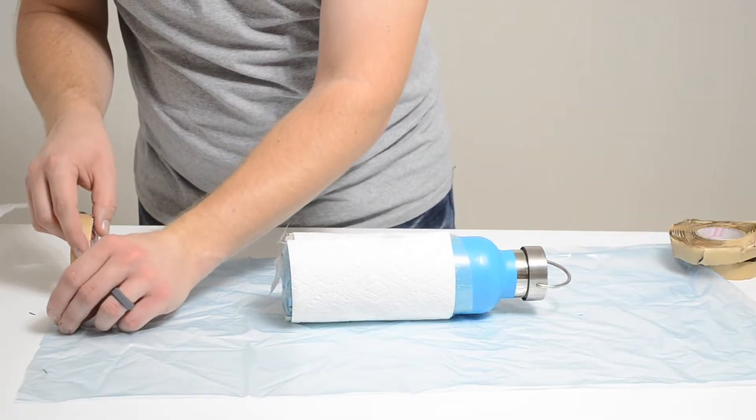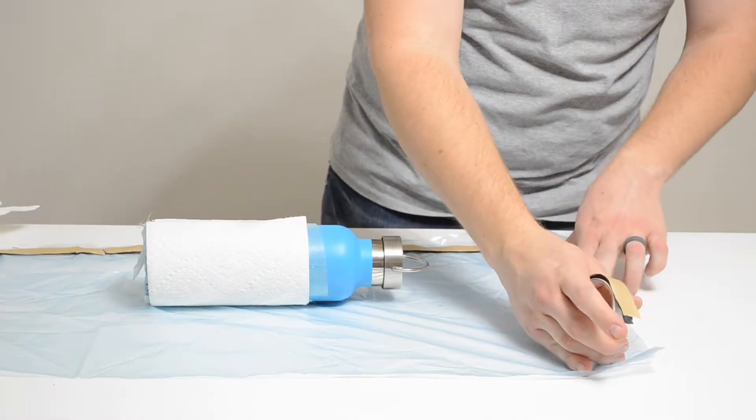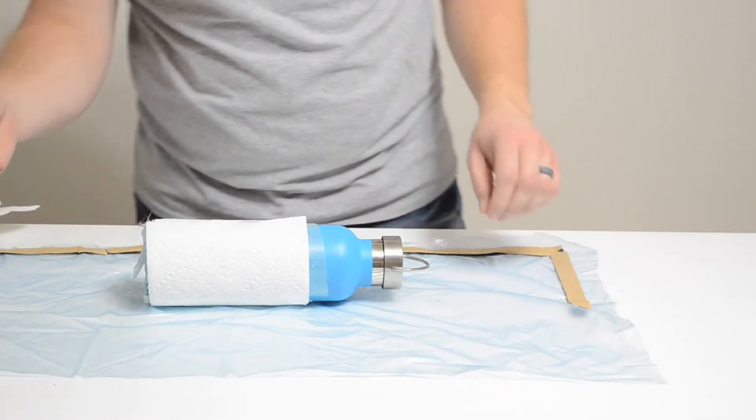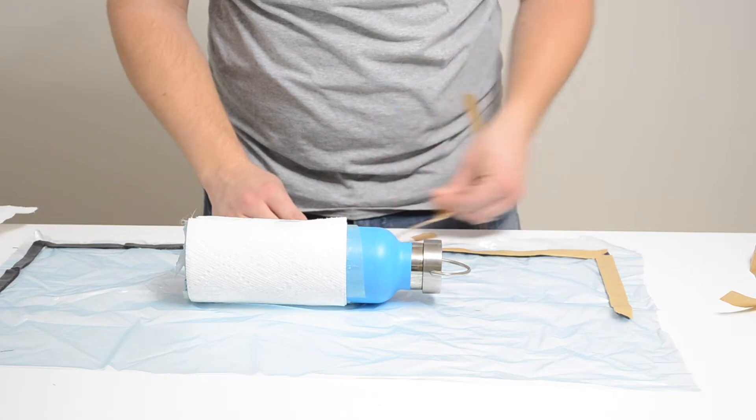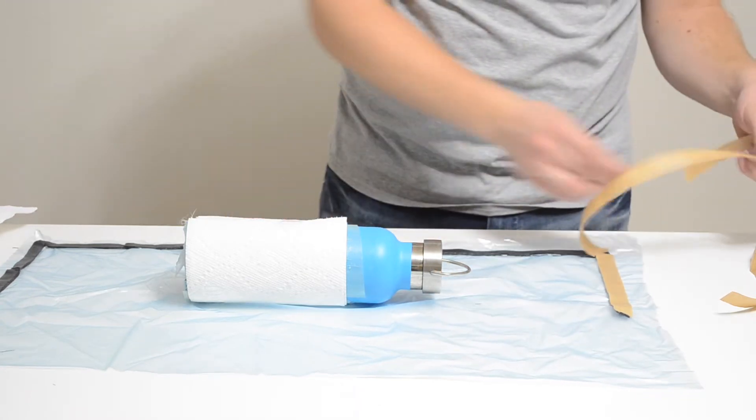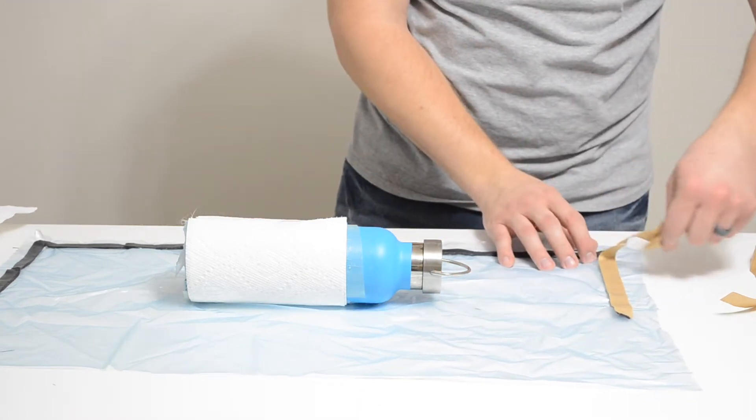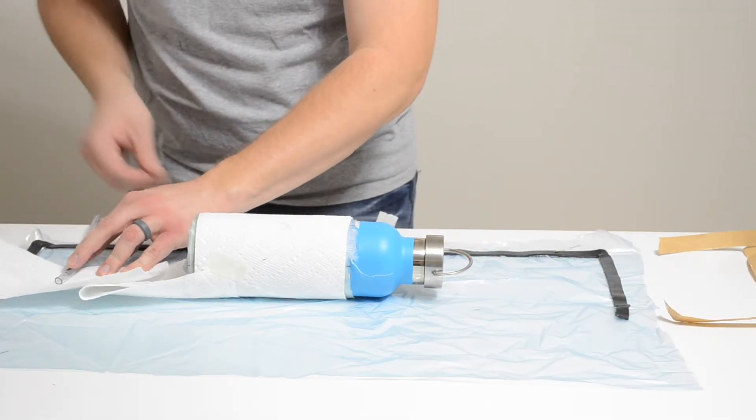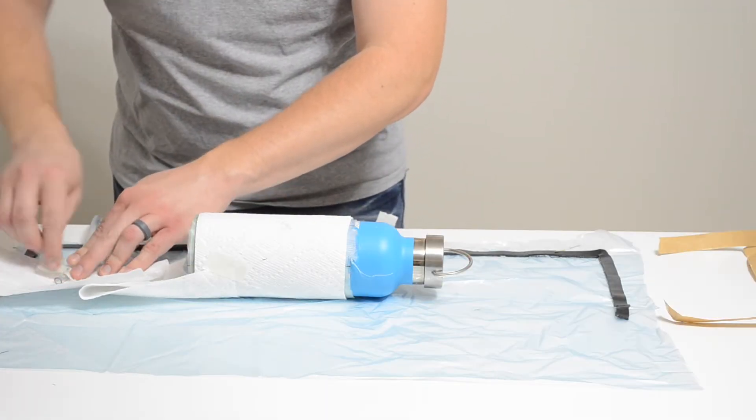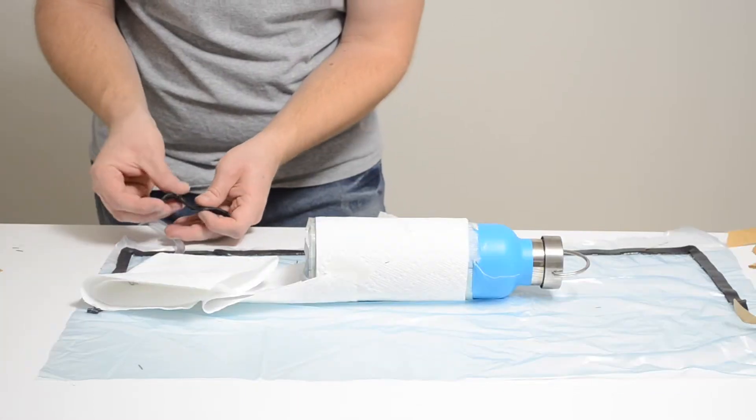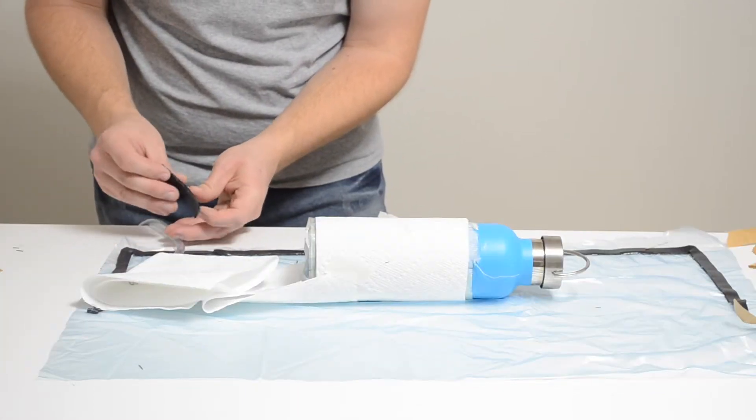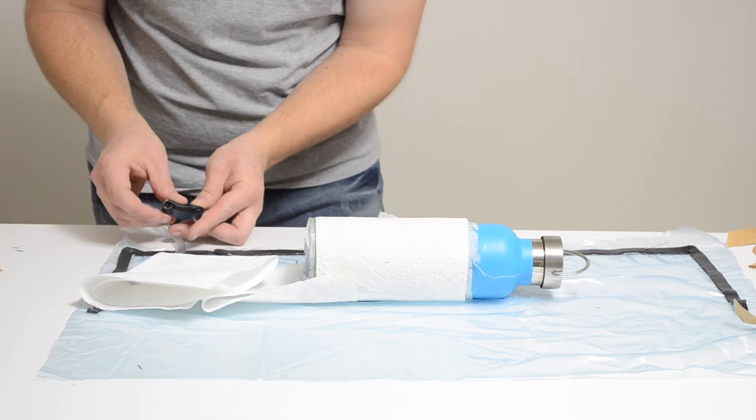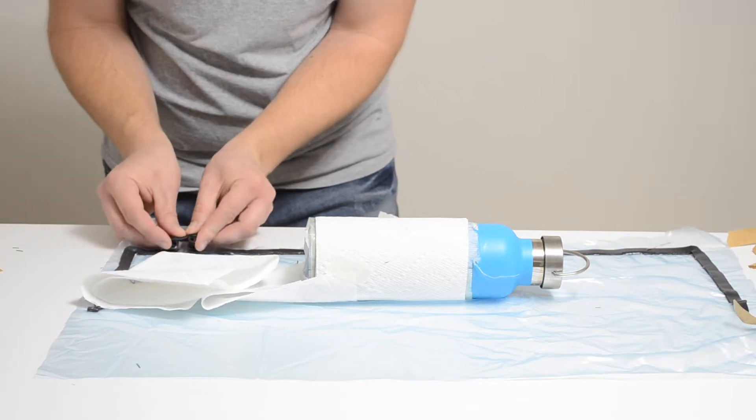Next I made my own vacuum bag by using some vacuum bagging film and some bag sealant tape or BST. I laid my vacuum tube down with some paper towel around it connecting it to the layup. You need to make sure there's a clear air path all the way from the vacuum to every part of your layup. Another strip of BST over the top of the vacuum tube allows me to seal it perfectly.